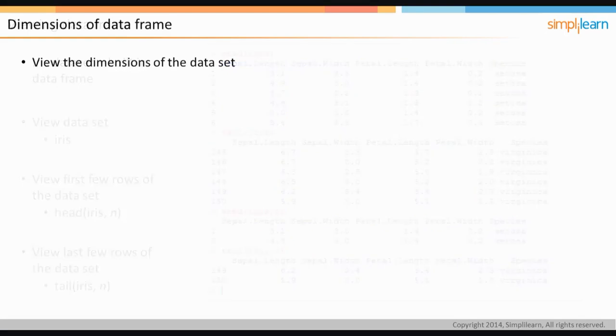Listed here are a few commands to view the dimensions of a dataset. Dim of dataset name gives a vector result of the number of rows followed by the number of columns.